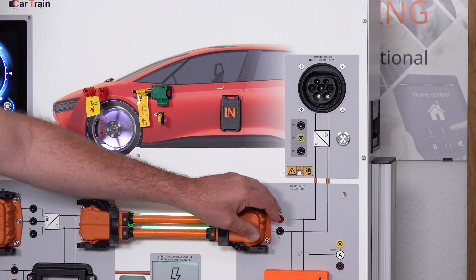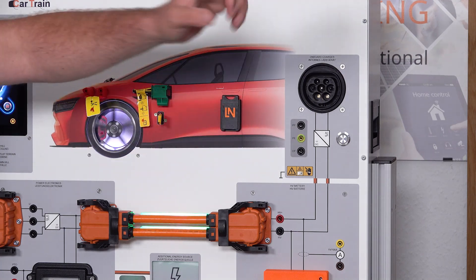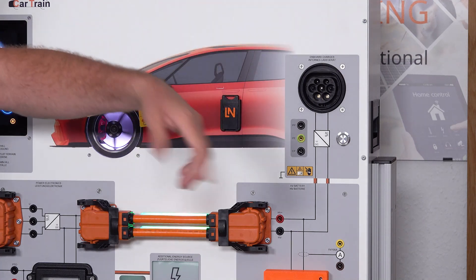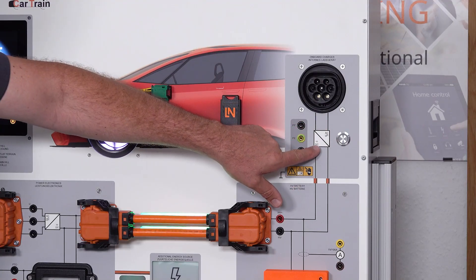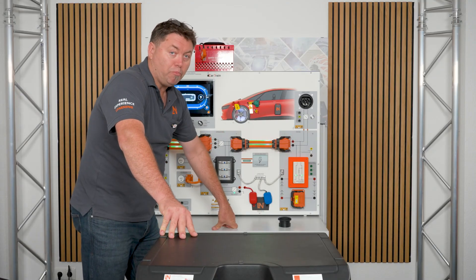This is our onboard charger using our EVSE, electric vehicle supply equipment, which is where the cable comes from out of the socket into here where that's being rectified into DC which is then able to charge our battery.